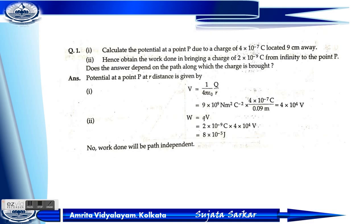After putting the values, we get V equals 4×10⁴ volt, since 1/4πε₀ = 9×10⁹ N·m²/C². The values of Q and R are already given. Work done W = Q×V = 2×10⁻⁹ coulomb × 4×10⁴ volt = 8×10⁻⁵ joule. The work done is path independent.